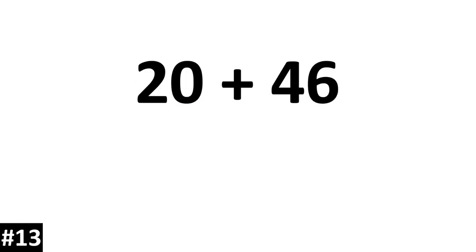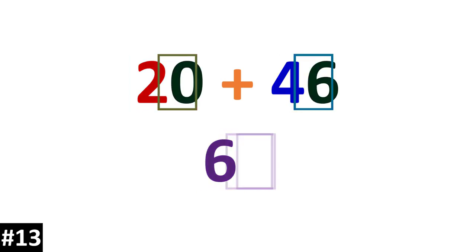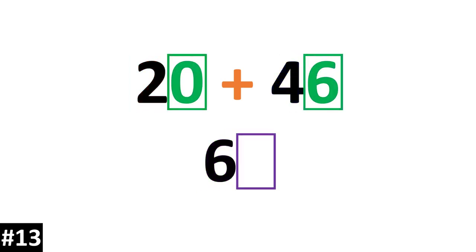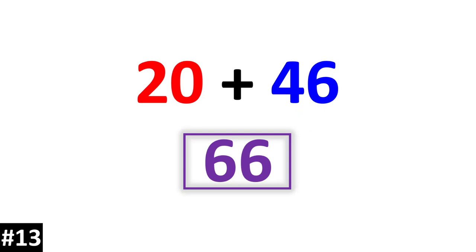20 plus 46. First we look at the tens: 2 tens plus 4 tens is 6 tens. Looking to the ones: 6 ones. The answer is 66.